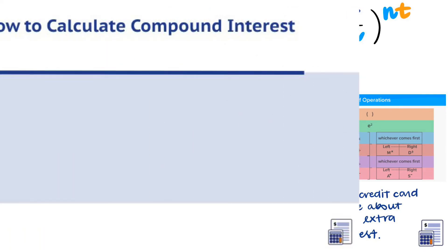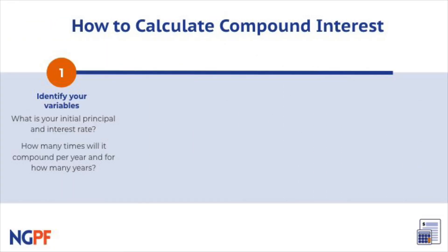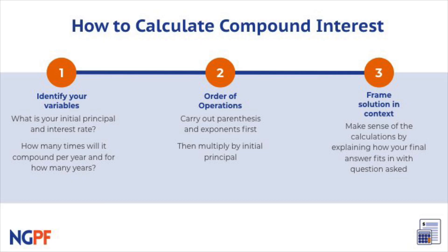Let's review how to calculate compound interest. First, you must accurately identify your variables, the P, R, N, and T in the formula. Then, you can use order of operations to solve. Finally, you can frame the solution in the context of the situation you are being asked to examine.